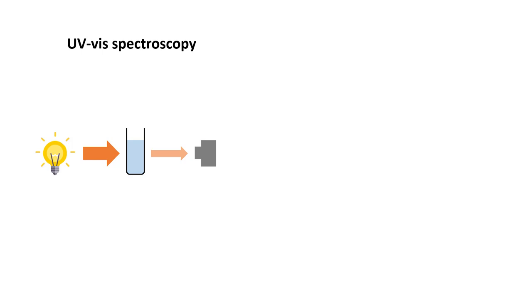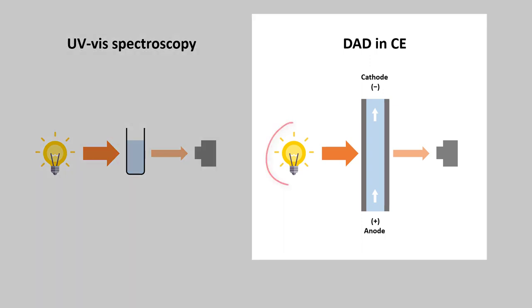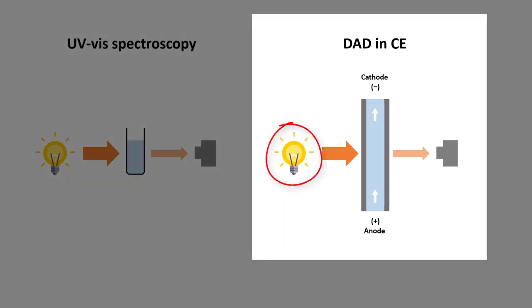In terms of setup, the DAD detector in CE is very similar to the UV-Vis spectrometer. First, we have a light source. Our sample is flowing through the capillary. And then we have the detector on the other end.